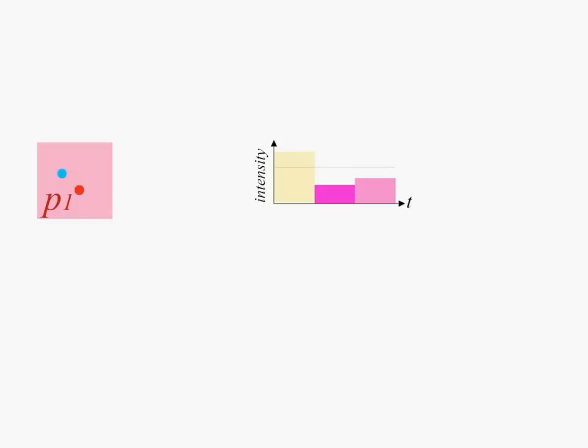If the pixel changes its color faster than the integration time of the eye, the signal on the retina is averaged. In this case, even with flickering, both receptors see the same outcome.